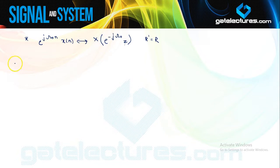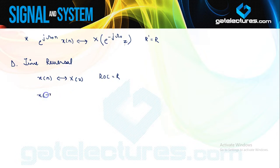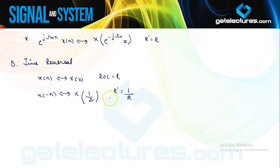The next property is time reversal. If x(n) has Z-transform X(z) with ROC R, then x(−n) has Z-transform X(1/z) with the ROC inverted. A pole or zero at z=z_k in X(z) moves to z=1/z_k. This reflects the fact that a right-sided sequence becomes left-sided when time-reversed, so the ROC is inverted accordingly.